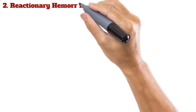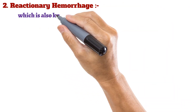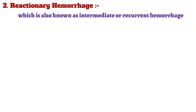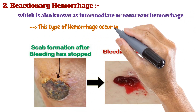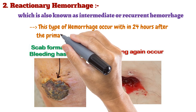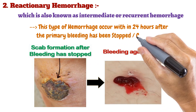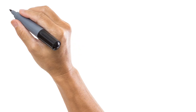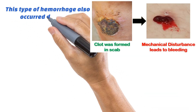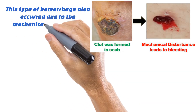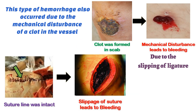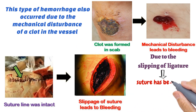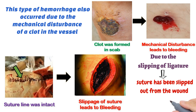The second type is reactionary hemorrhage, which is also known as intermediate or recurrent hemorrhage. This type occurs within 24 hours after the primary bleeding has been stopped or controlled. It occurs due to mechanical disturbance of a clot in the vessel and also due to the slipping of a ligature — meaning the suture has slipped out from the wound, resulting in bleeding.